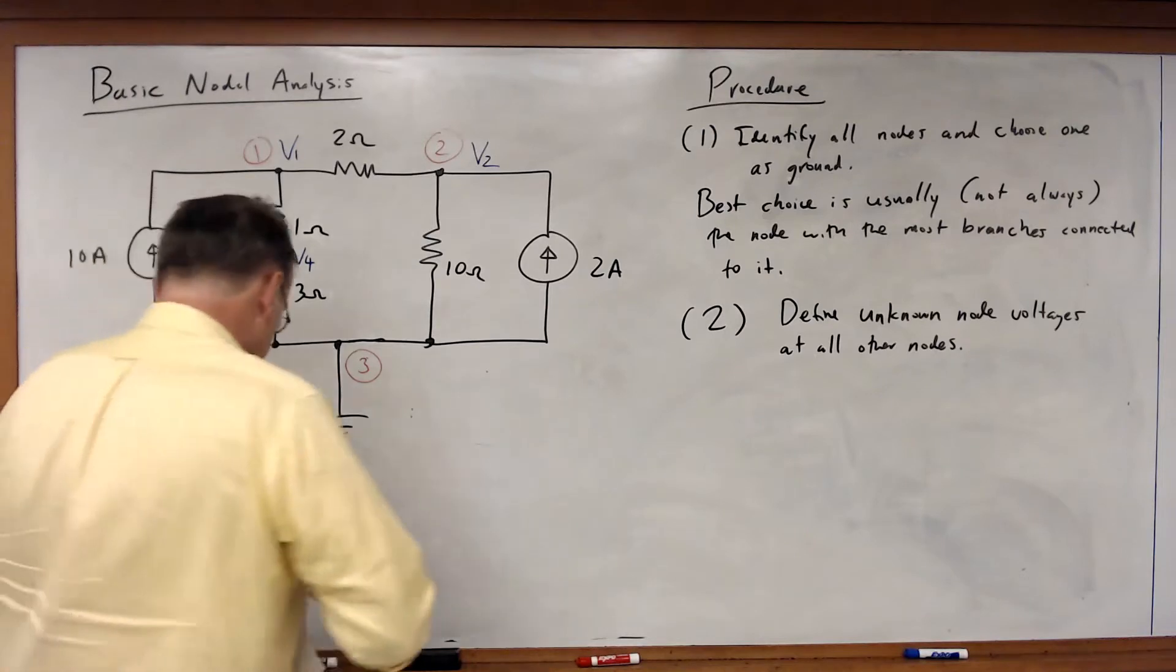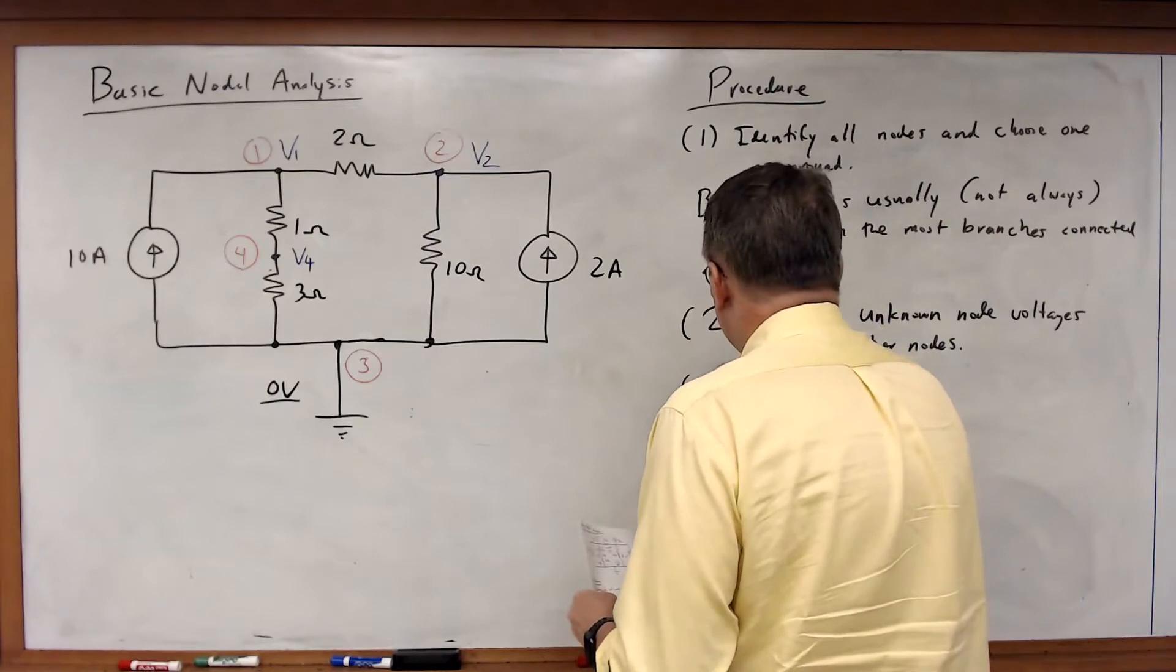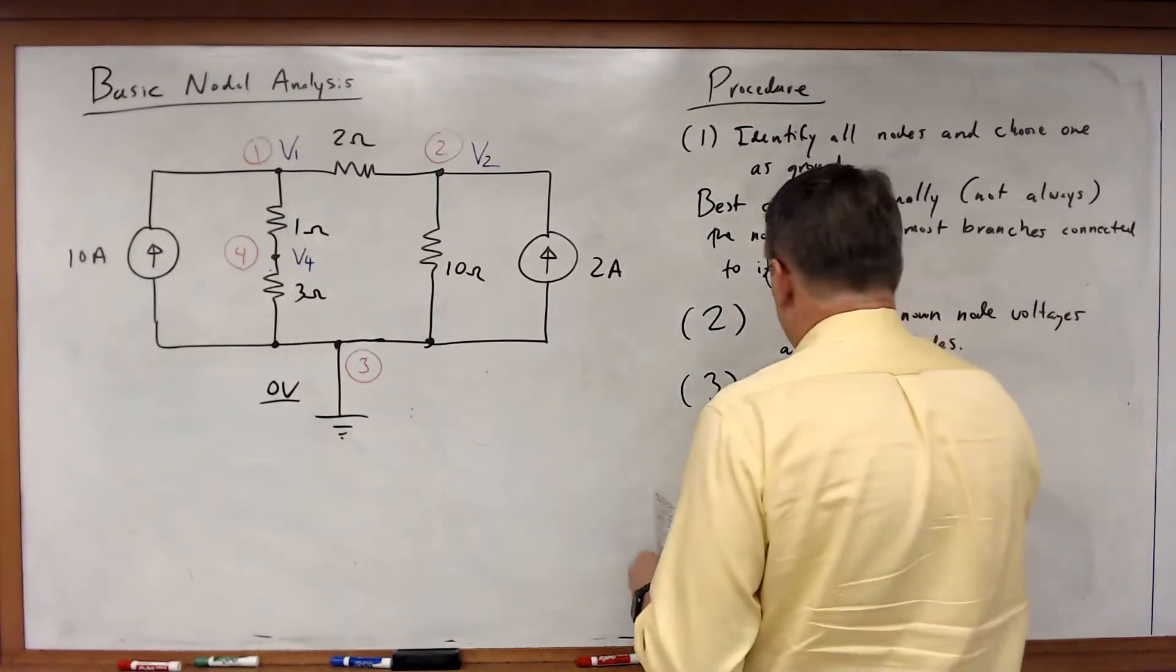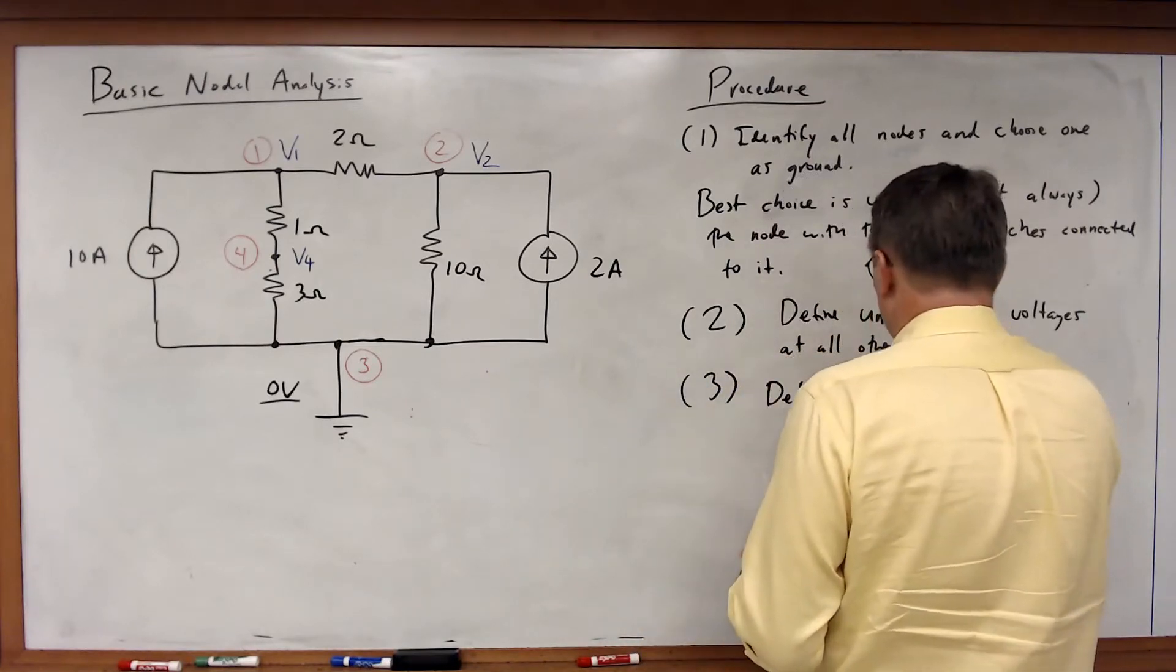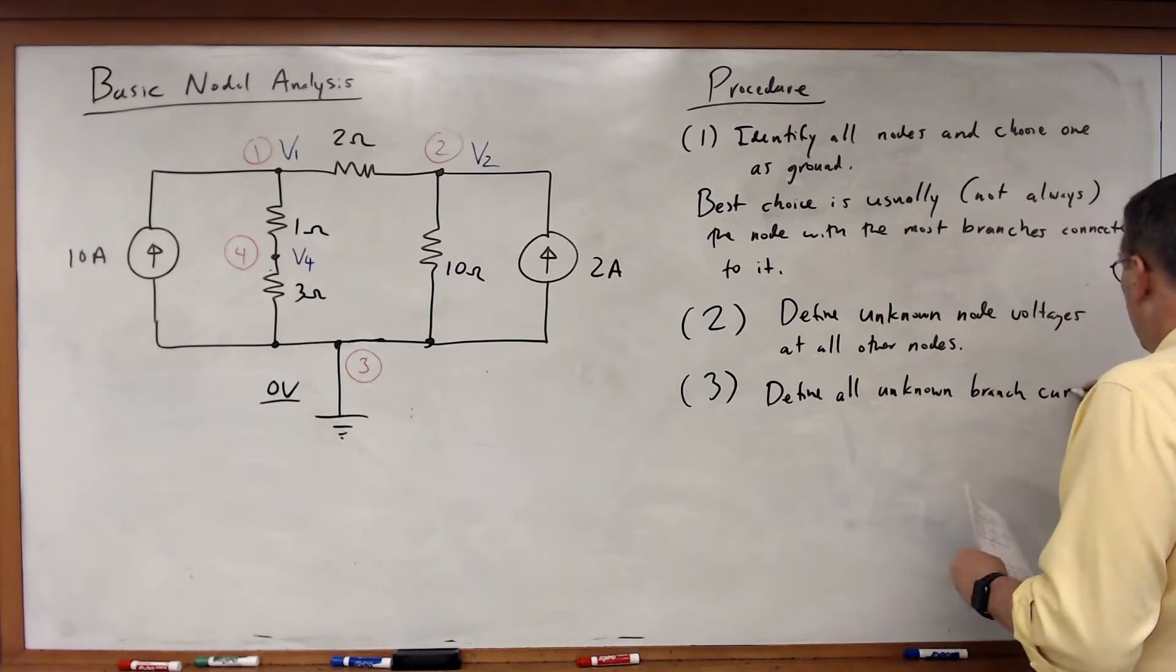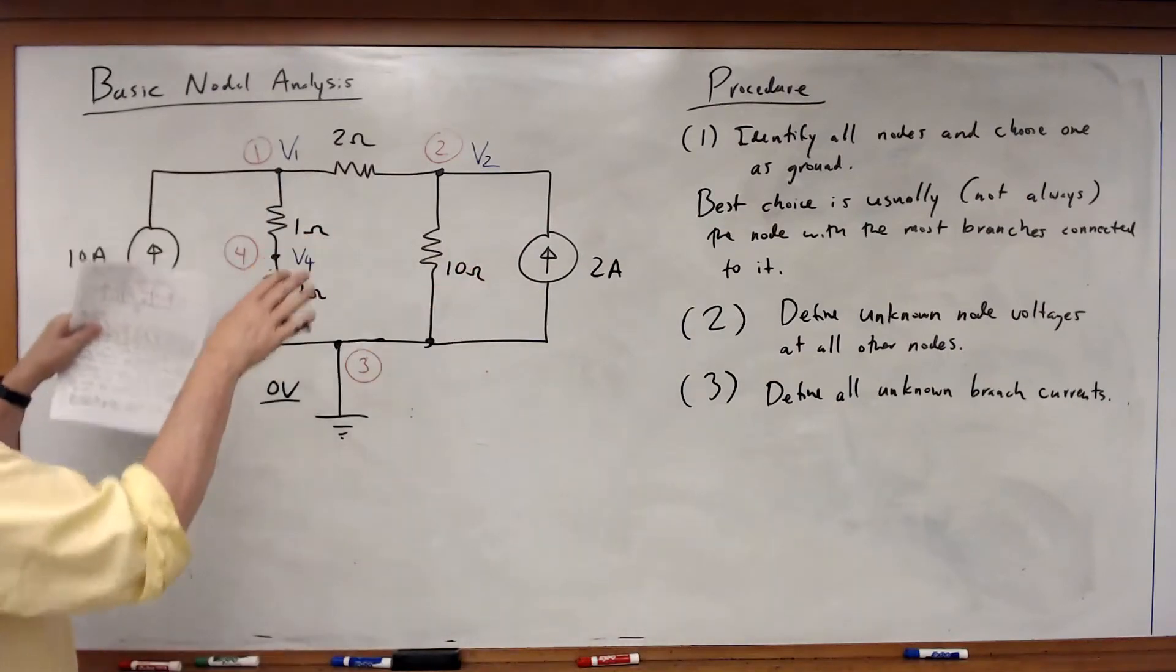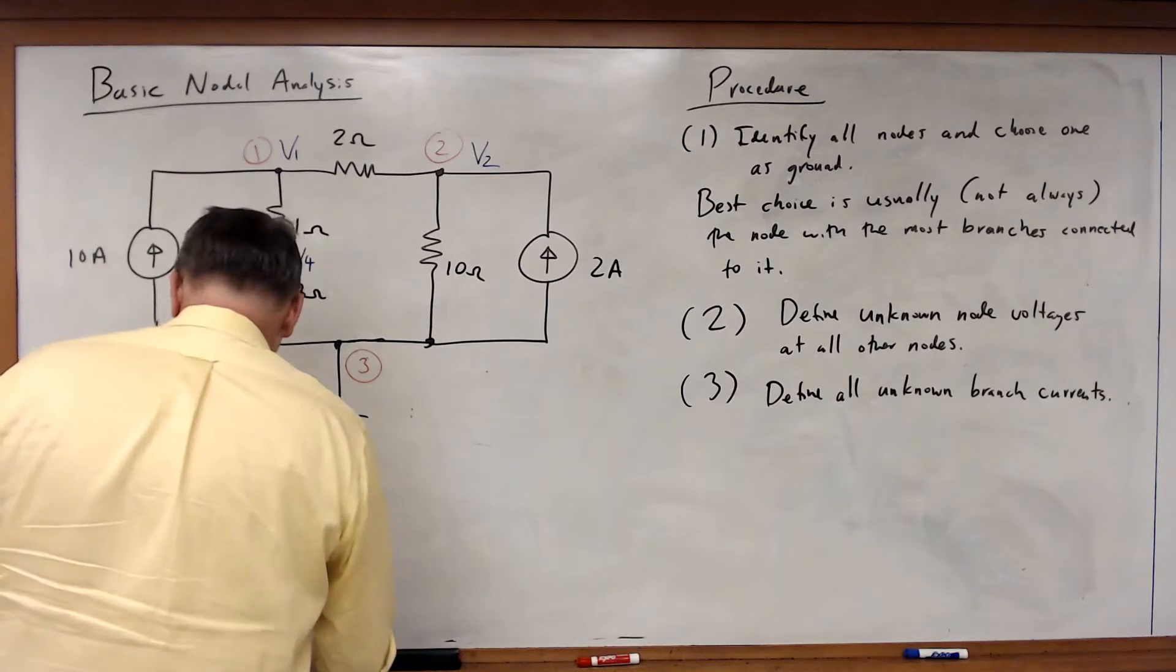Next step, I'm going to define all of my unknown branch currents. So looking at all of my branches, all of my elements that have a node on each end, what are my unknown branch currents? So let's go ahead and define variables for those.